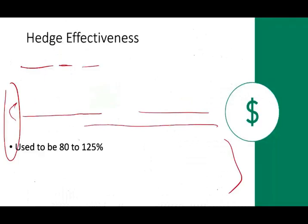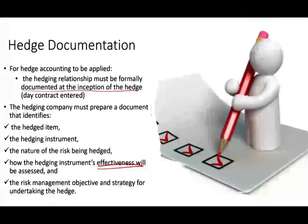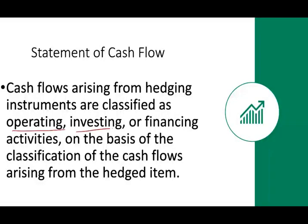Regarding the effect of hedging on the statement of cash flows — hedging could be classified as operating, investing, or financing activity. Cash flows arising from hedging are classified based on the item being hedged. If the hedging instrument derives its value from a receivable, that's operating. If it derives from property, plant and equipment or an investment, it's investing. If it derives from stocks and bonds being issued, that's a financing activity.